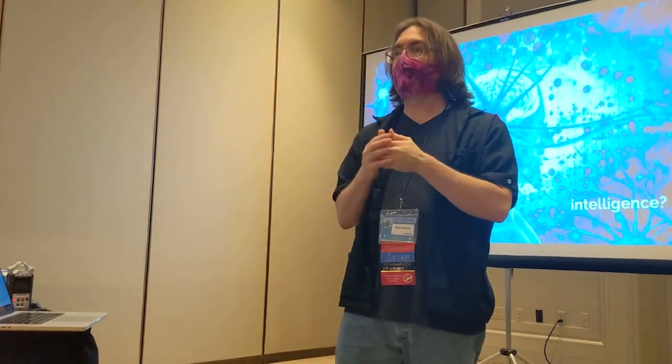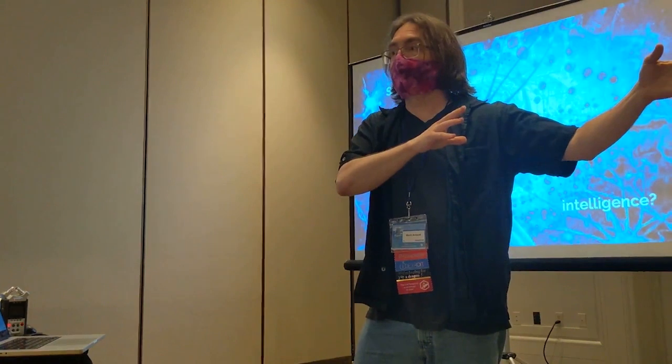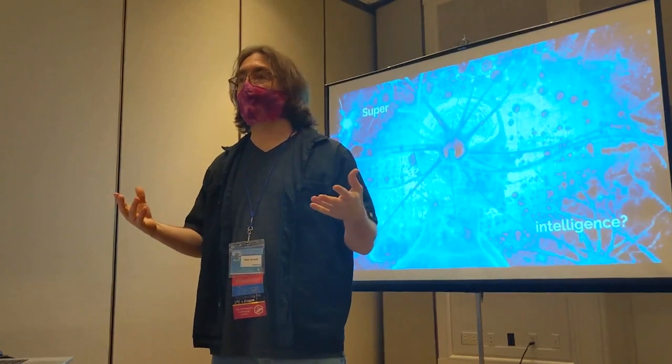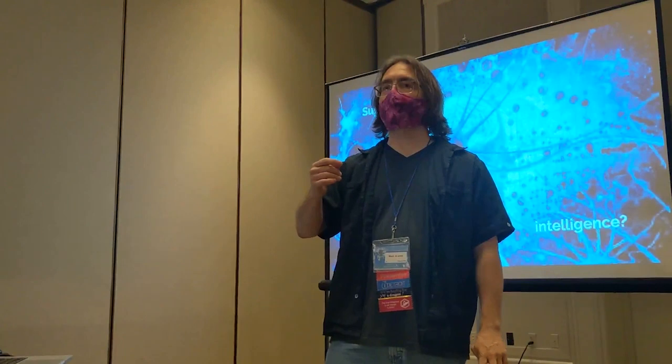There are two different camps of people worried about AI problems. One camp focuses on real-world training failures — like what you thought you were training for was predicting outcomes, but what you actually trained for was someone's skin color. The other camp is worried about a superintelligence that invents nanotechnology by sitting and thinking and turns everybody into gray goo. These are two separate classes of problems that people address.